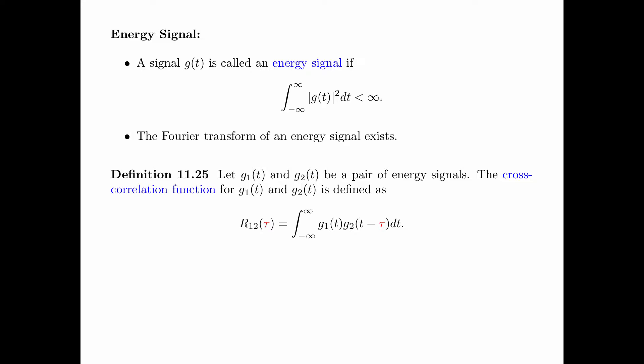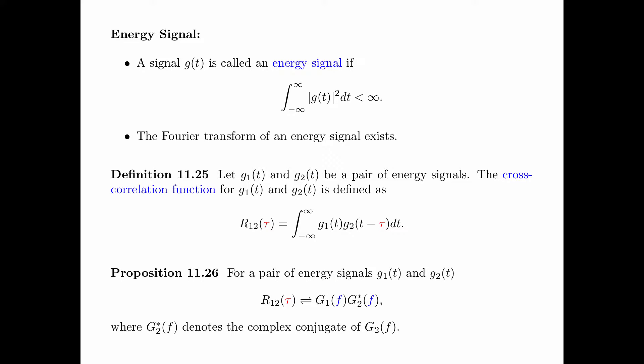Let g1 of t and g2 of t be a pair of energy signals. The cross-correlation function for g1 of t and g2 of t is defined as r12 of tau, where tau is a dummy time variable, equal to the integral of g1 of t times g2 of t minus tau dt, for t from minus infinity to infinity. For a pair of energy signals, the cross-correlation function r12 of tau and the product of g1 of f and g2 star of f form a transform pair, where g2 star of f is the complex conjugate of the Fourier transform of g2 of t.